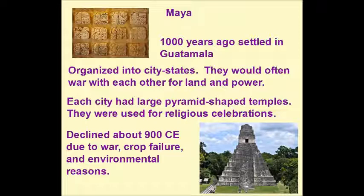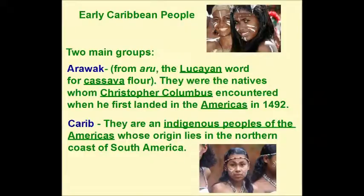The early Caribbean people had two main groups. The first was the Arawak, a name that comes from 'Aru,' the Lucayan word for cassava flower. They were the natives whom Christopher Columbus encountered when he first landed in the Americas in 1492. The second group were the Caribs, an indigenous people of the Americas whose origin lies in the northern coast of South America.